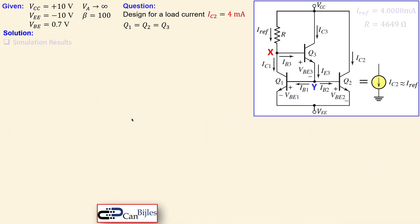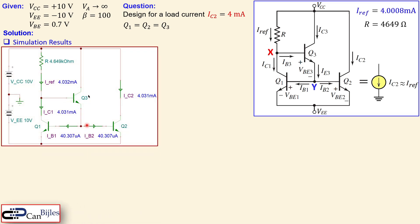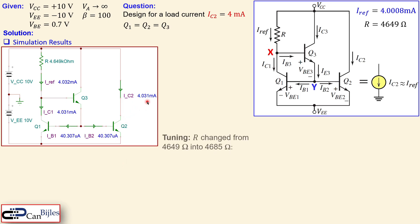In the SPICE simulation, we see VCC and VE as two DC sources with the calculated value of R. The simulation shows the current is slightly larger than 4 milliamps — about 31 microamps larger — so it is not exactly as calculated. To fine-tune, we increase R from 4649 to 4685 ohms — an increase of only 36 ohms — to reduce the currents.